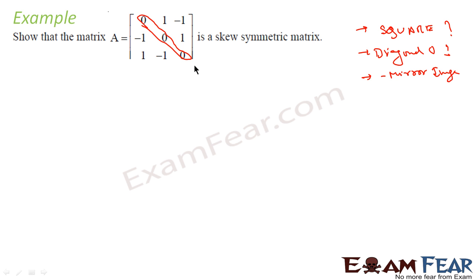So see, the first step is true. It is a 3 by 3 matrix: 3 horizontal rows, 3 vertical columns. Second is also true: all diagonal elements are 0. Third, if you see, for 1 it is minus 1. So yes, it is a skew symmetric matrix.